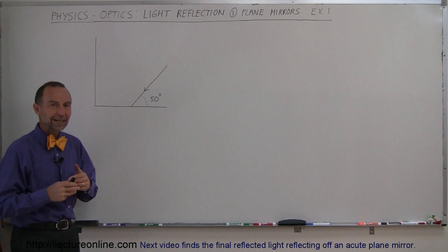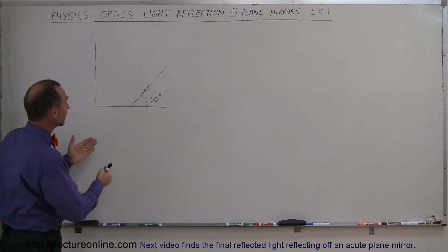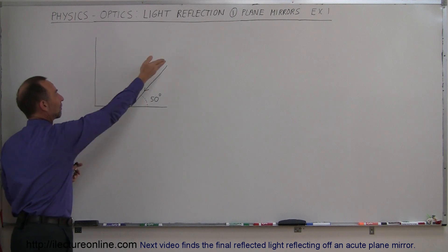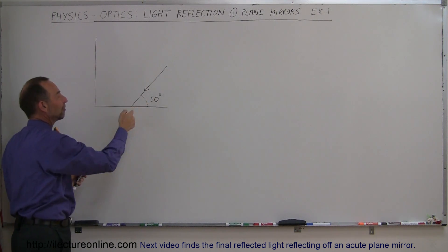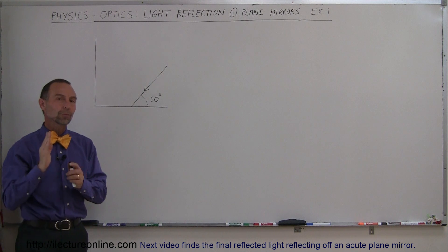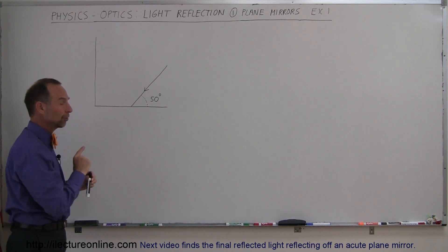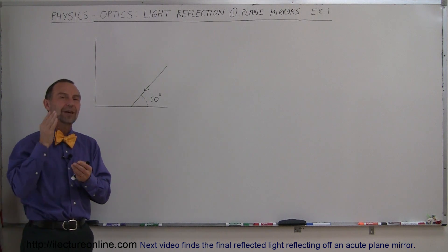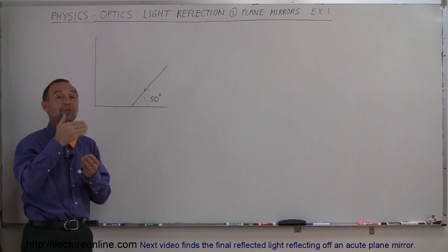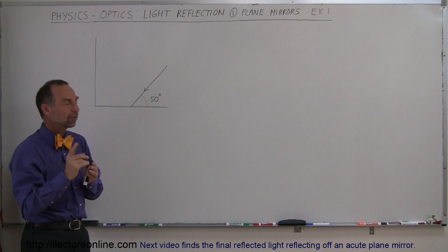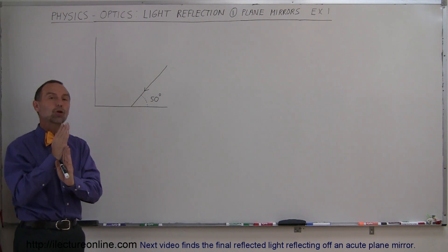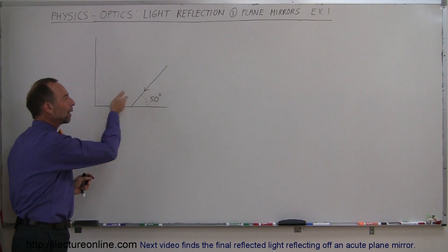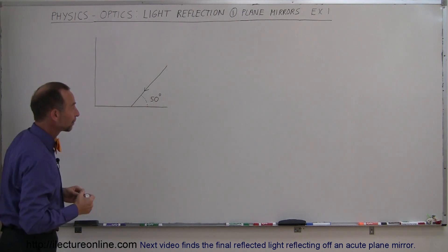We're going to start out with a fairly easy, straightforward problem where the angle is 90 degrees. This is a mirror and this is a mirror. We have a ray coming in at an angle of 50 degrees relative to the mirror itself — not to the perpendicular of the mirror, but to the mirror. We have to be careful, because when we deal with reflection, the angle of reflection is always equal to the angle of incidence, but that angle is relative to the normal of the mirror, not the angle relative to the mirror itself.